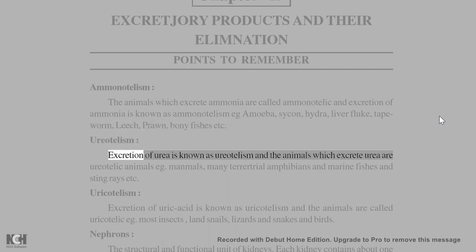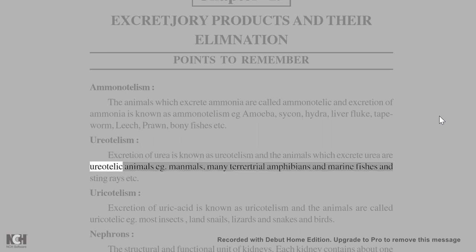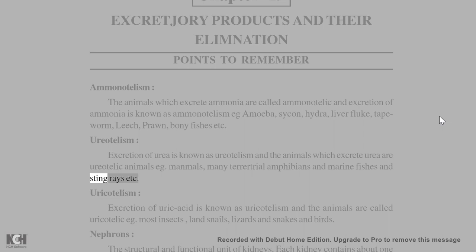Ureotelism: Excretion of urea is known as ureotelism, and the animals which excrete urea are ureotelic animals. Examples include mammals, many terrestrial amphibians, marine fishes, and stingrays.